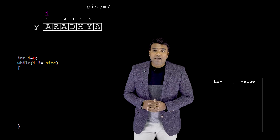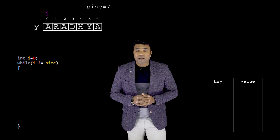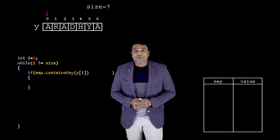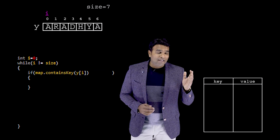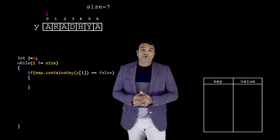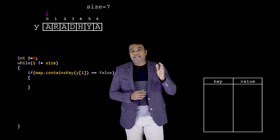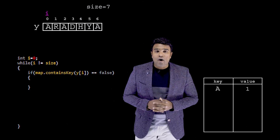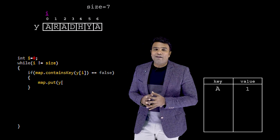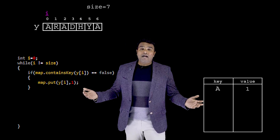Inside the loop, each time I check if the map contains the key 'y[i]'. For the first time, 'y[i]' is 'a', and if I look at the map the key 'a' is not present — so I get the result as false. When the result is false, it means the key is not present in the map, and it is my duty as a programmer to put both the key and the value. So I put the key 'a' with value '1', because it is the first occurrence of 'a'. I use the put inbuilt method to place the data inside the map.